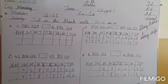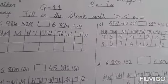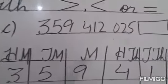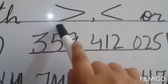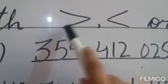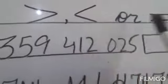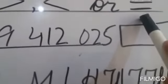Now we will do question number 11. Question number 11 is: fill in the blanks with less than, greater than, or equal to sign. The greater than sign is used when we show greater numbers, the less than sign is used when we show lesser numbers, and the equal to sign is used when two numbers are equal.